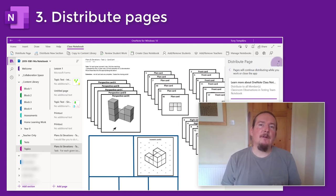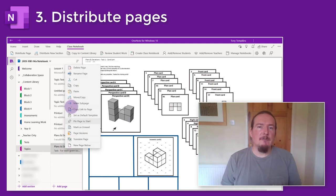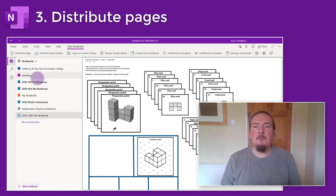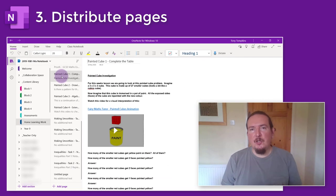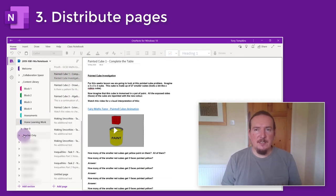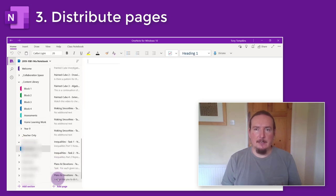Just a note of caution: sometimes it takes a while for the copies to show up. The distribution process is handled by the OneNote servers in the cloud rather than in your local notebook, so it will depend on how busy those servers are on any given day. Most days this is an almost instantaneous process, but on other days I've had to wait 5 to 10 minutes for them to start showing up. So whilst you can mostly get away with distributing pages on the fly during a lesson, if it's mission critical you might want to distribute the page a little in advance. If it hasn't shown up for a student they can always go to the content library and copy over the page manually.